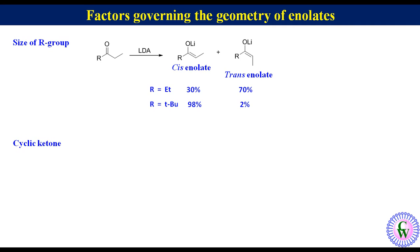In the case of cyclic ketones, because of geometrical constraint only trans enolate is formed. For example, if we treat cyclopentanone with LDA, only trans enolate is formed.